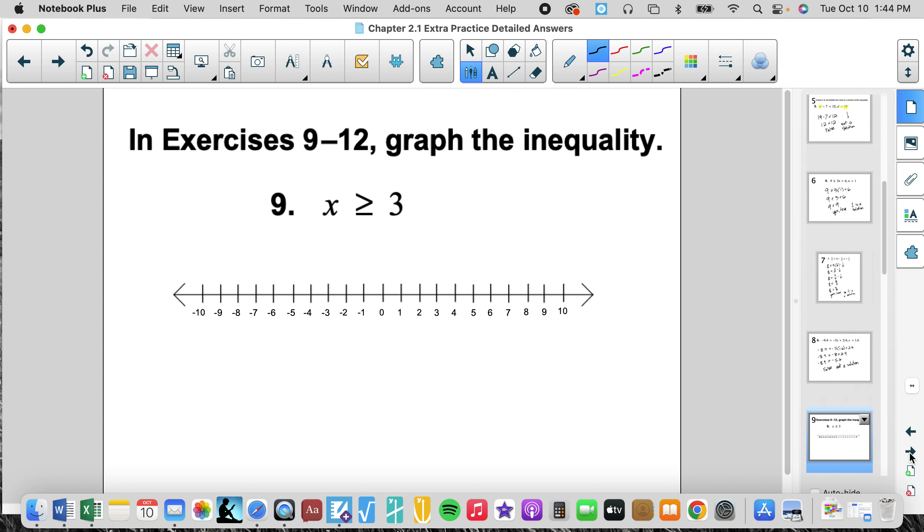Problems 9 through 12, we're going to graph the inequality. So this says the solutions are greater than or equal to 3, so we can include it. And the solutions are greater than, so my solutions would go to the right. I need to have a closed circle which includes the boundary, and then it would go to the right.